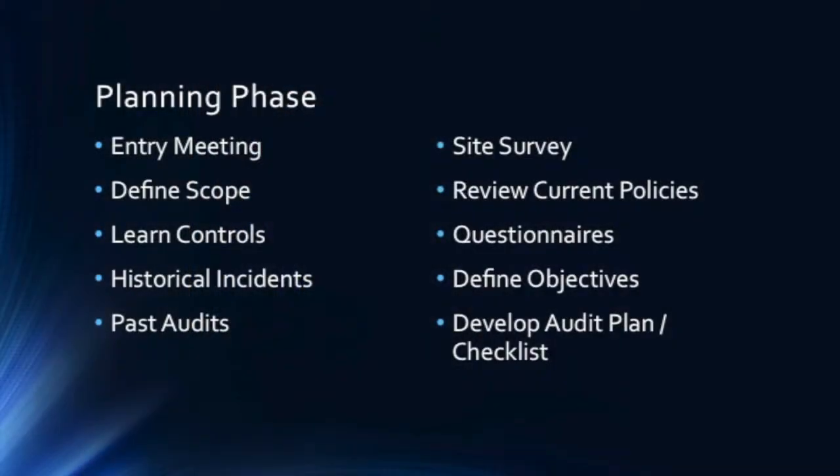The second element is defining the scope — determining how big the audit will be: 10 days, two weeks, or two months, depending on the size of the organization and how much they want audited. The third element is learning the controls already in place — understanding why those controls were created and what they are intended to achieve.